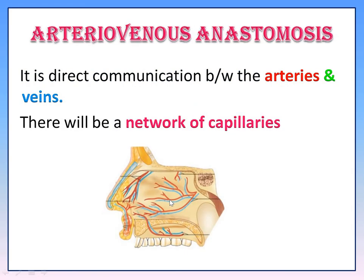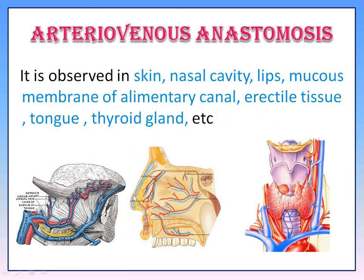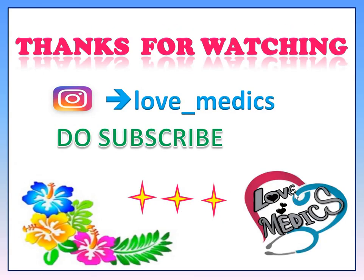Arterial Venous Anastomosis is a direct communication between an artery and a vein, with a network of capillaries. Capillaries are an example of Arterial Venous Anastomosis. This type is observed in the Skin, Nasal Cavity, Lips, Mucous Membrane of the Alimentary Canal, Erectile Tissue, Tongue, and Thyroid Gland. Thanks for watching.